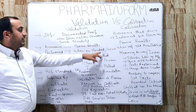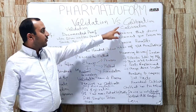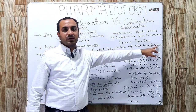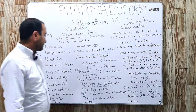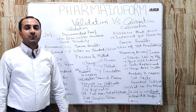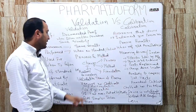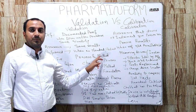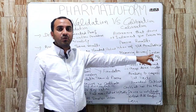Validation is performed by using a validation protocol. Calibration is performed by following a specific standard operating procedure, or SOP. Validation is used for processes and methods; calibration is used for measuring devices or instruments.